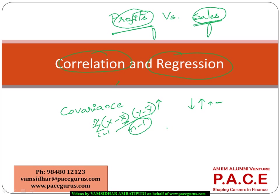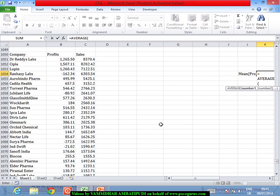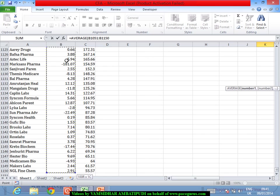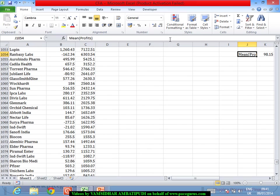Division by n minus 1 is used because we work with sample data, but if we work with the entire population data we can use n itself. Using this formula we can find the covariance, and once we find it we can get into finding the correlation. The mean of profits — taking the average of all values — comes out to around 98.